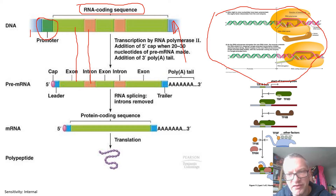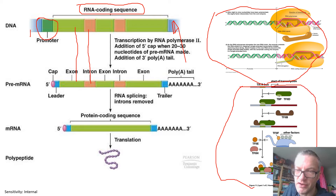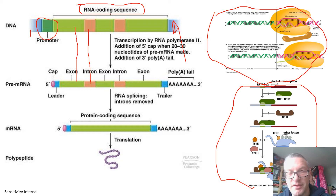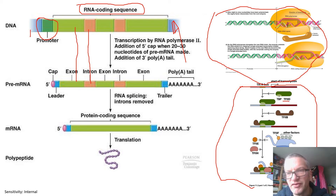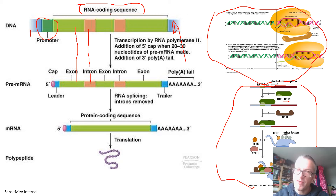In eukaryotes, as shown in the extract of the diagram here — you need to refer to the actual slides for full detail — the process is more complicated in that there are a number of regulatory factors. The main RNA polymerase that makes messenger RNA in eukaryotes is RNA polymerase II, and there are transcription factors such as TFIID (transcription factor for RNA polymerase II, where D is the notation for which factor it is). We described how these different factors interact to enable RNA polymerase II to anchor at the correct point.